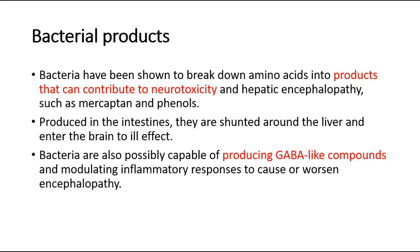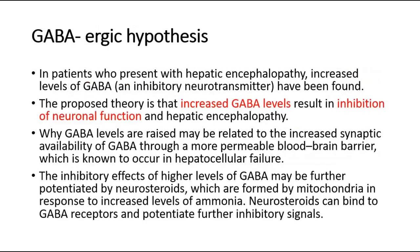Bacteria are also possibly capable of producing GABA-like compounds, and modulating inflammatory responses to cause or worsen encephalopathy. The third hypothesis is related to the GABA neurotransmitter. In patients who present with hepatic encephalopathy, increased levels of GABA, which is an inhibitory neurotransmitter, have been found. The proposed theory is that increased GABA levels result in inhibition of neuronal function and hepatic encephalopathy.